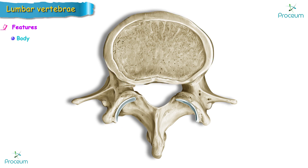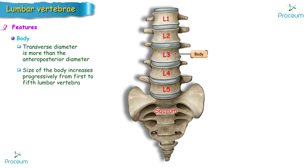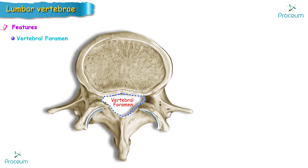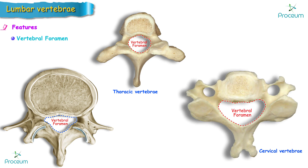The body of the vertebra has a transverse diameter greater than the anteroposterior diameter. The size of the body increases progressively from the first to the fifth lumbar vertebrae and is massive and reniform in shape. The vertebral foramen is triangular in shape; it is larger than in the thoracic vertebrae but smaller than in the cervical vertebrae.